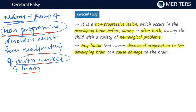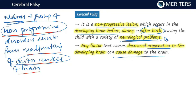It is a non-progressive lesion — it does not worsen over time. The disease once it occurs remains as such; there is no worsening on its own. It is a non-progressive lesion which occurs in the developing brain before, during, or after birth, leaving the child with a variety of neurological problems. It is basically a neurological disorder. Any factor that causes decreased oxygenation to the developing brain can cause damage and result in cerebral palsy.